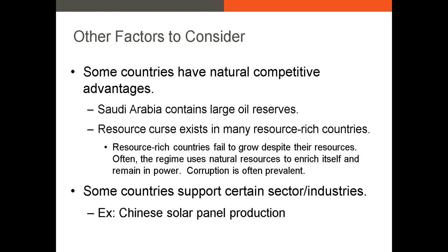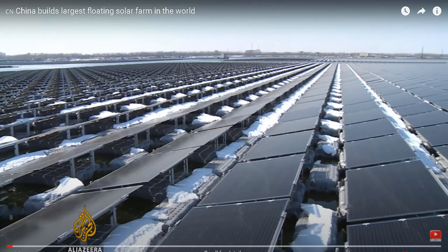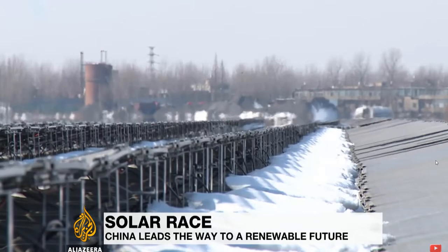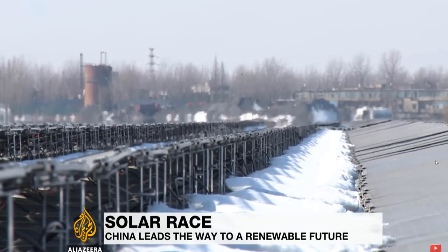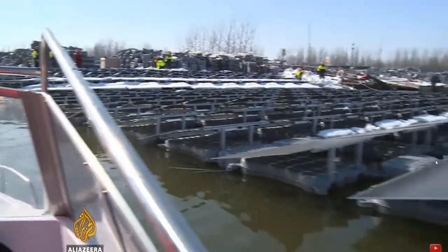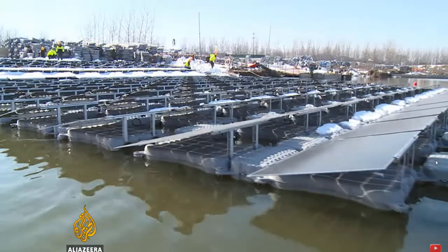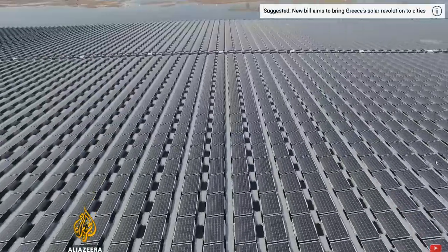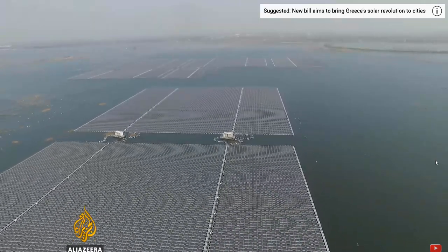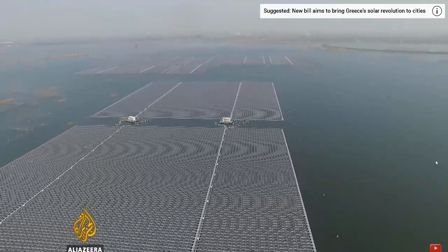In other countries, the government could support a certain industry, which can be beneficial for investors in that industry. A good example is the Chinese government's support of the solar panel production industry. China is one of the largest consumers of coal and other fossil fuels, leading to serious pollution concerns. As a result, the central government has directed massive investments in solar and wind farming, leading to a significant decline in the production cost of solar panels manufactured in China.